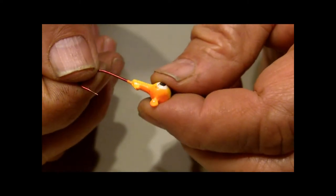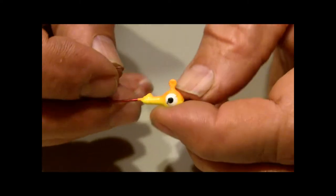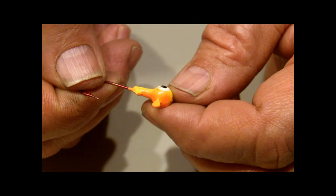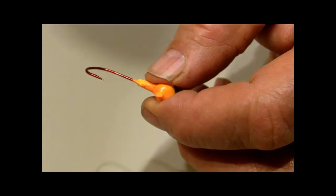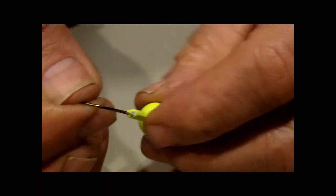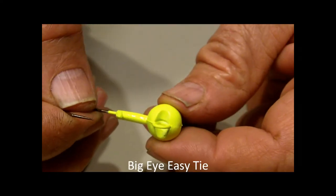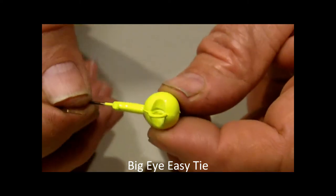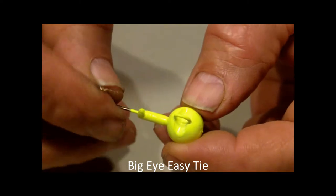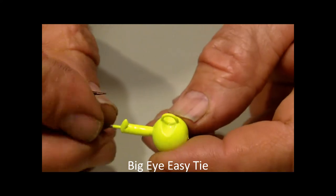Here's an eighth ounce jig, same thing. Painted shut, nearly impossible to tie even after you poke the paint out of the eye. But here's what we have at Engineering Dynamics. We've invented and patented the Big Eye Easy Tie Jig. No holes to clean out. Easy to tie any knot. You can see the lead in.